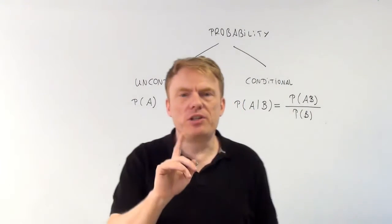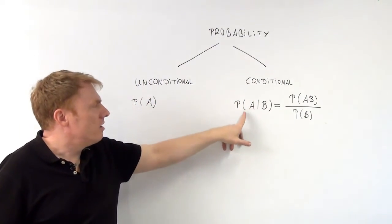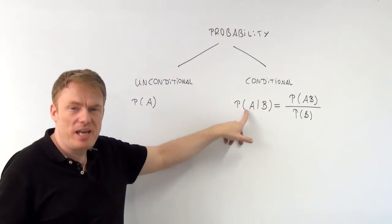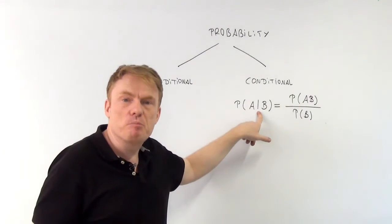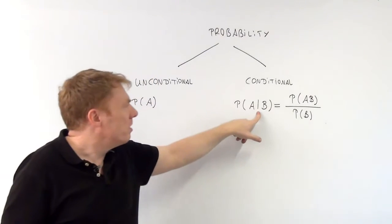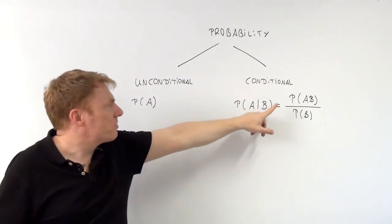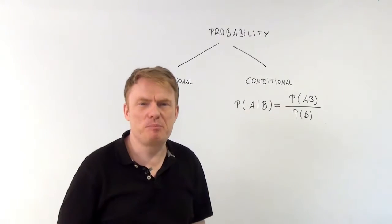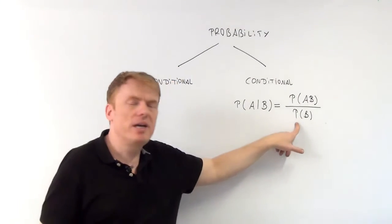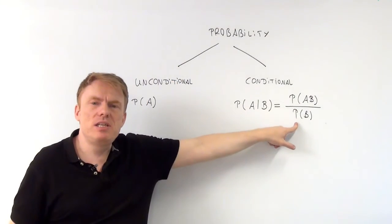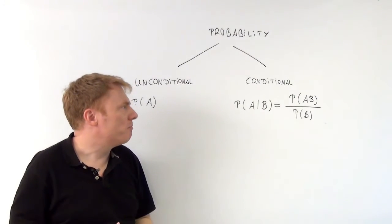Whereas a conditional probability is something different. The probability of an event A given a different event B is defined as follows: the probability of A and B occurring at the same time, divided by the probability of the given event B.